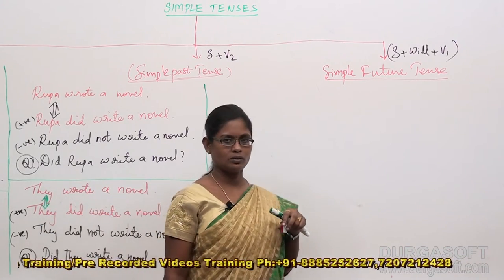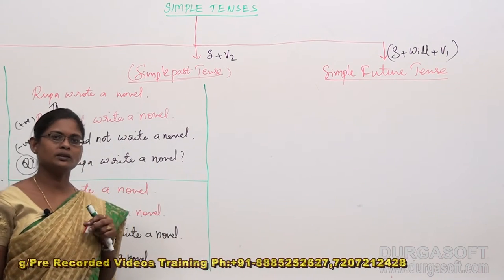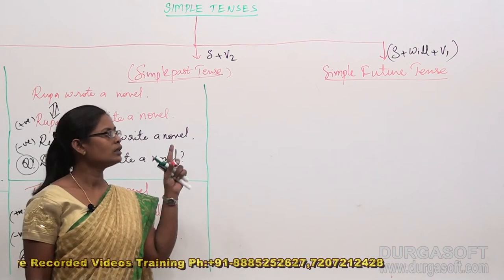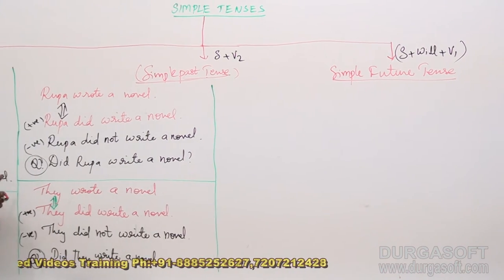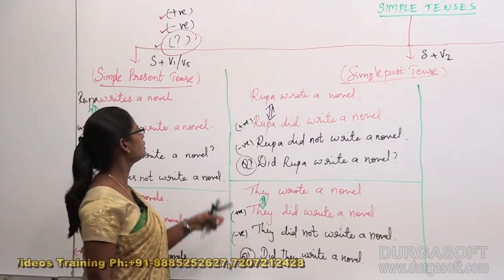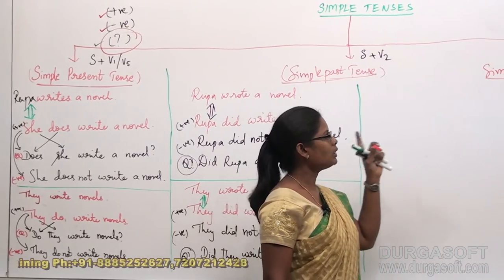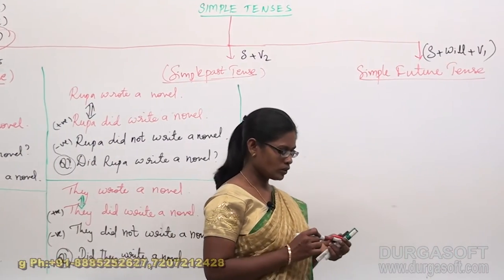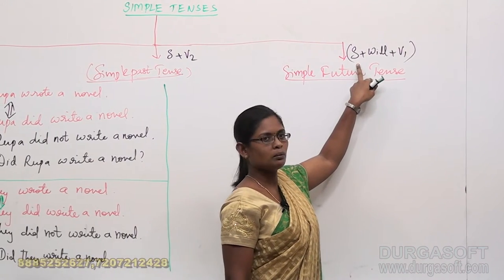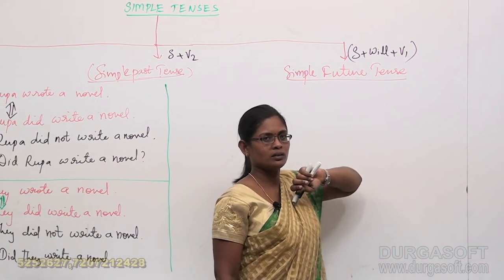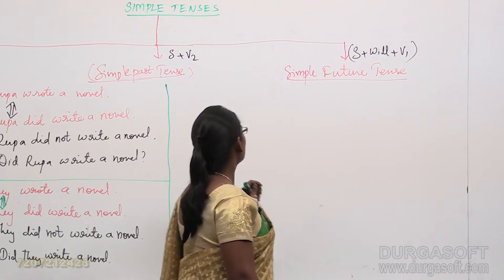Now, simple future tense zone. How can we construct a positive sentence, negative sentence, and a questioning sentence in simple future tense? Let us see. So far, we have seen construction of these three respective sentences in simple present tense zone and simple past tense zone. Now, coming to simple future tense zone, we also have the structure: subject plus will plus V1. It's a commonly known structure for all of us.